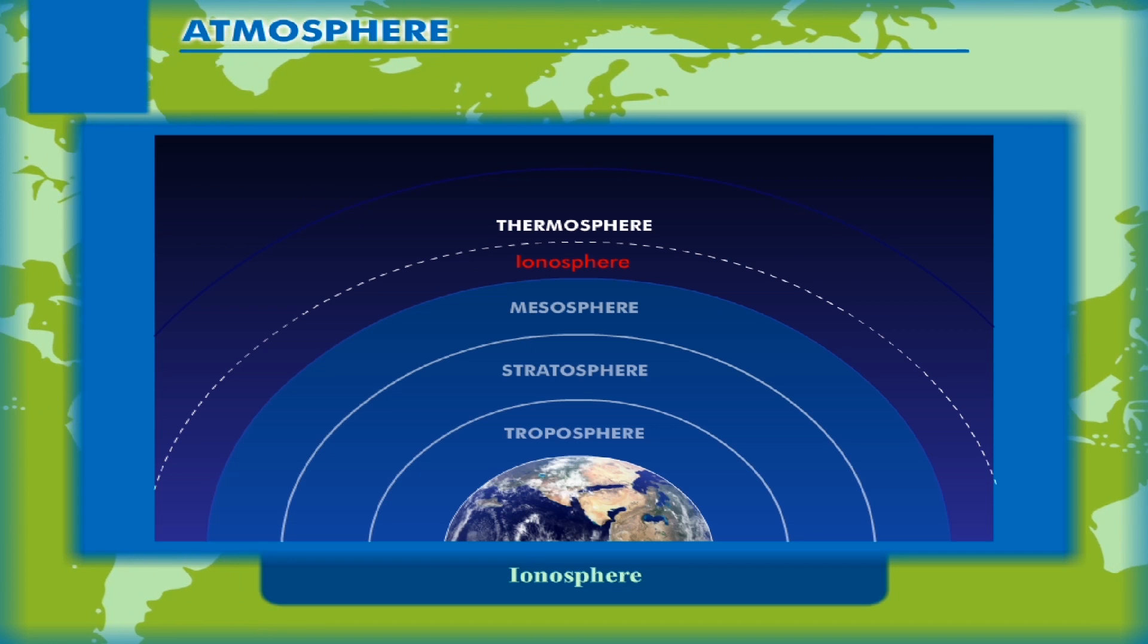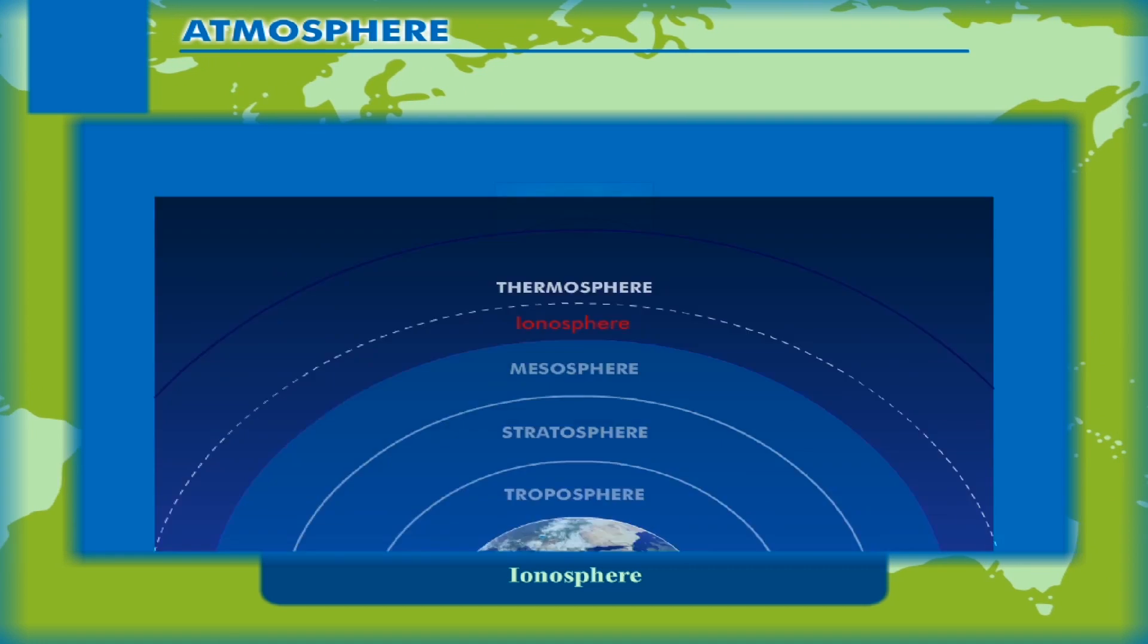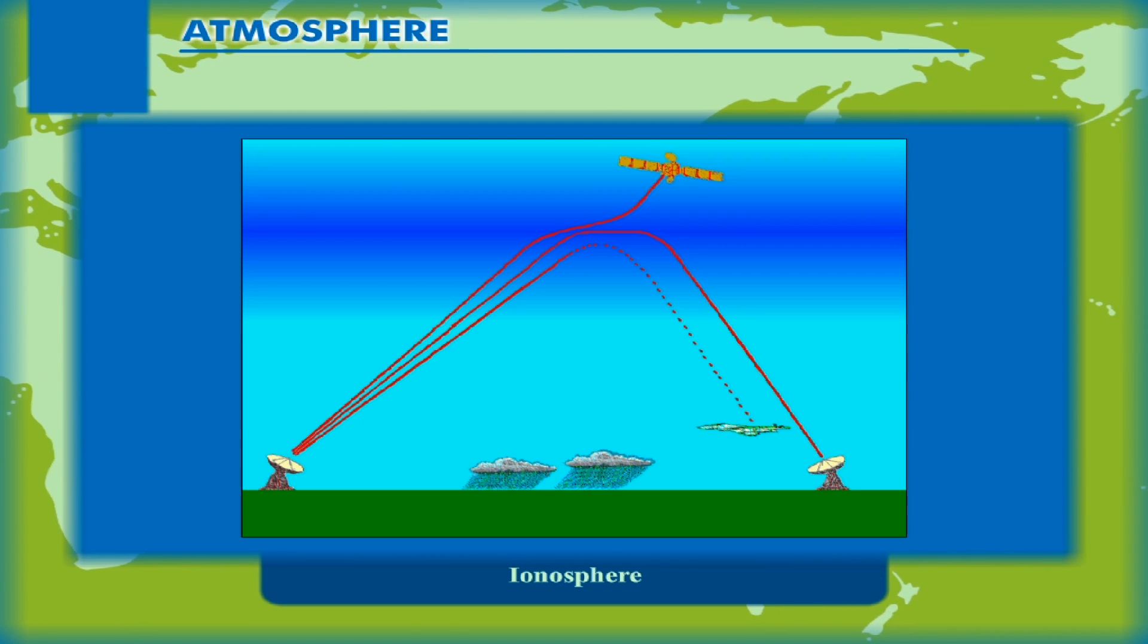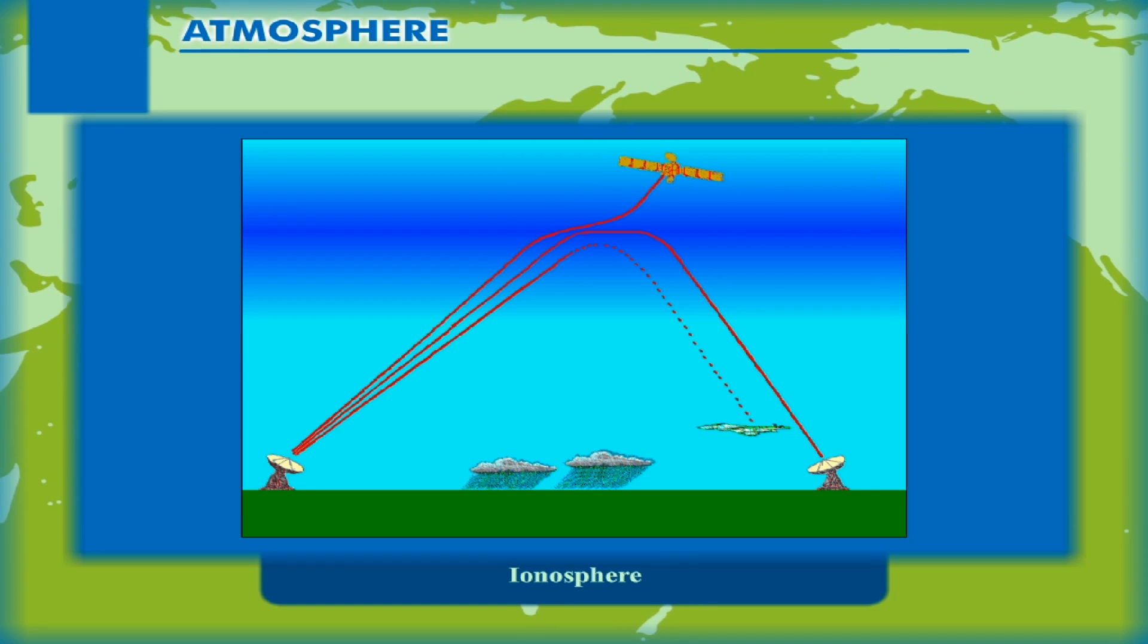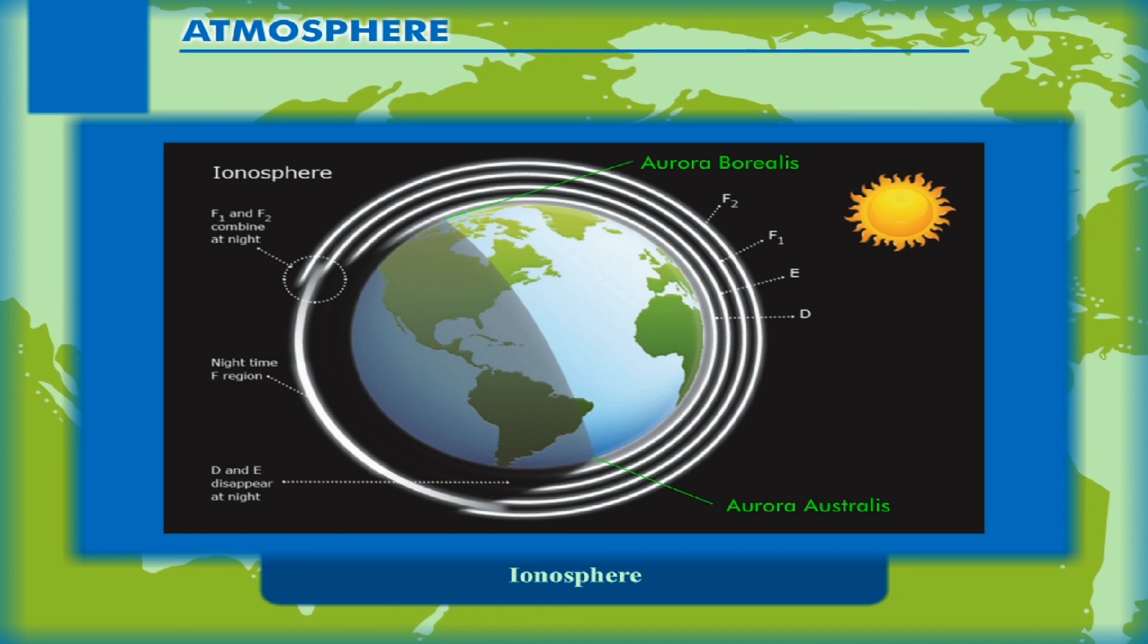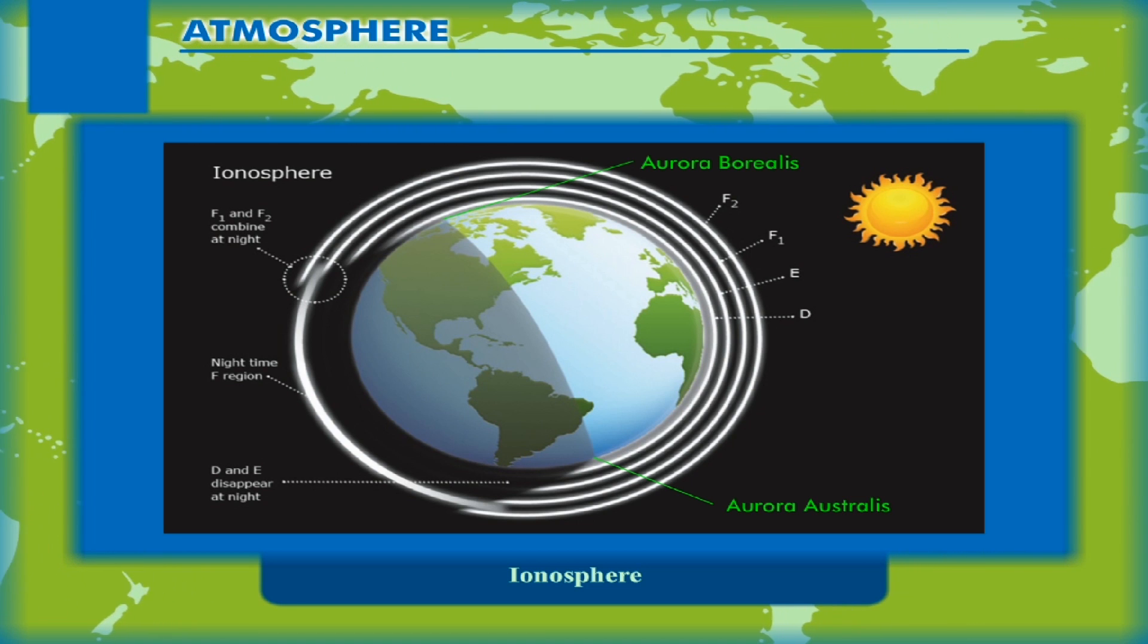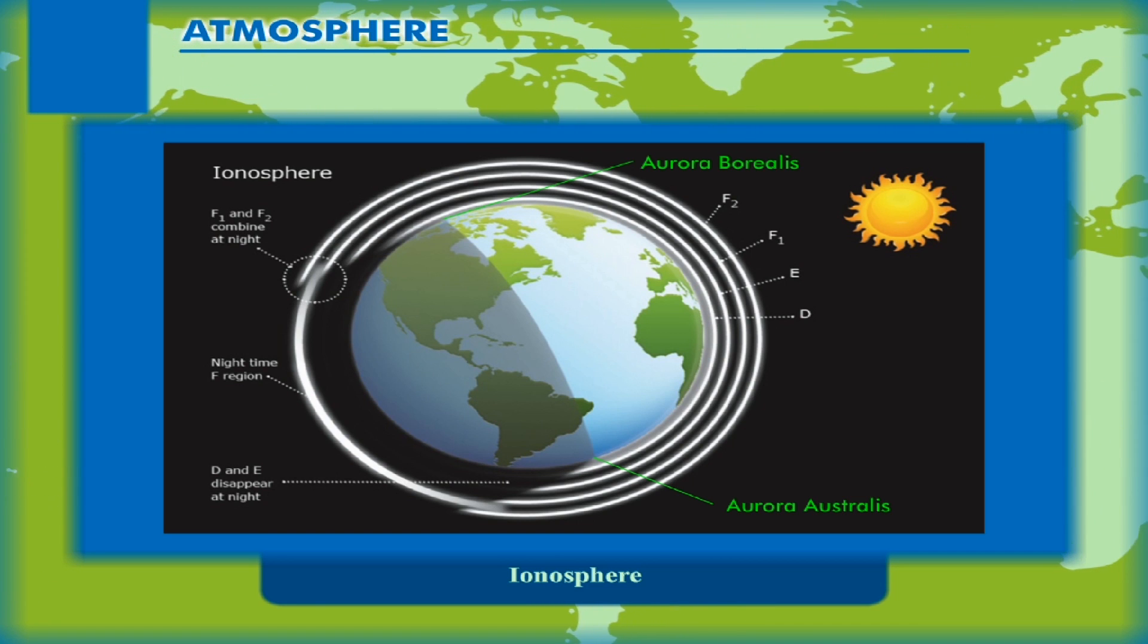Ionosphere: It lies above mesosphere and extends up to a height of about 400 km above Earth's surface. It contains electrically charged particles called ions which help in transmitting communication signals. Radio waves are reflected back to the Earth from this layer. Communication satellites help in transmitting the signals back to Earth. The temperature rises rapidly with altitude in this layer. Near the north pole, this phenomenon is known as aurora borealis or the northern lights, and near the south pole, this phenomenon is called aurora australis or the southern lights.